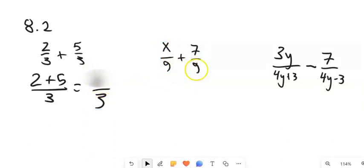Over here, I have x ninths plus seven ninths. These are the same ninths. So that's the same as x plus seven ninths. I don't know what x is. I can't combine it with seven. So that's my answer right there.